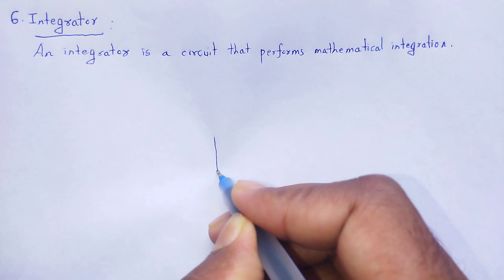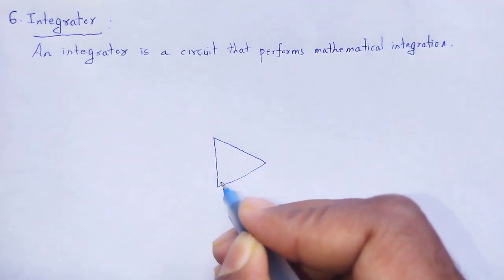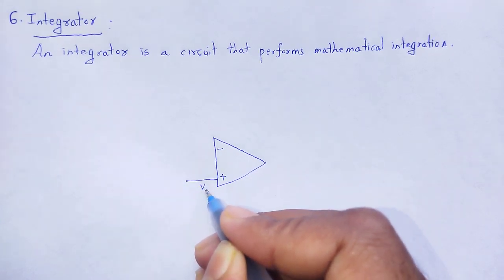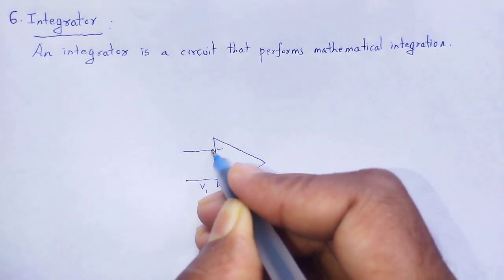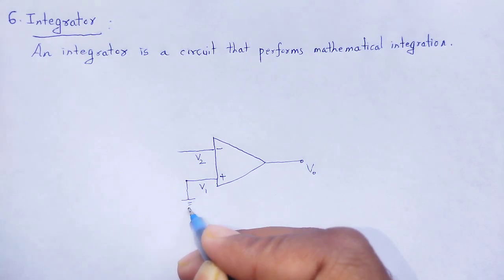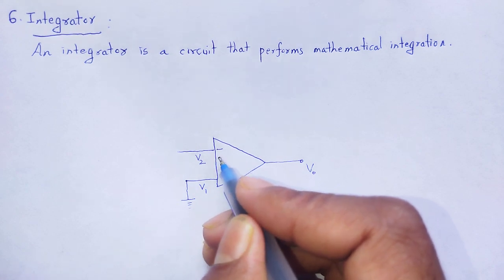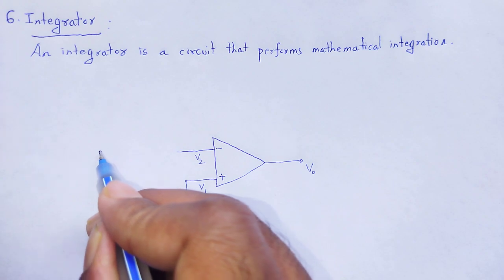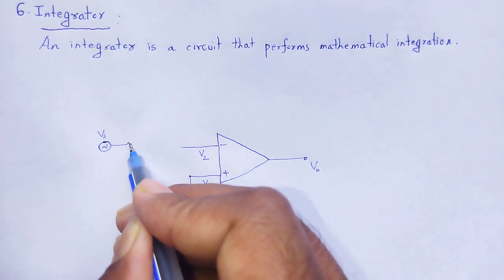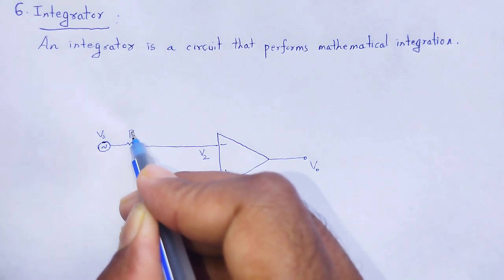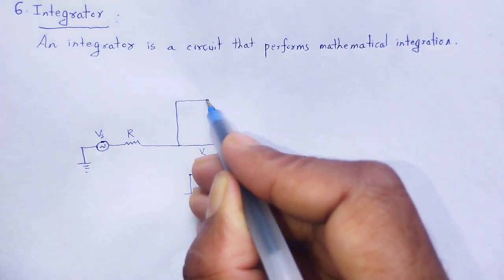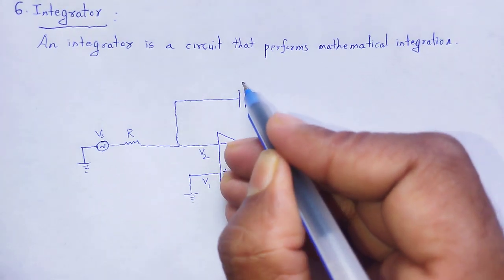Let us consider an OPAM. It has two terminals: positive non-inverting terminal with potential V1, and negative inverting terminal with potential V2, and output V0. That positive terminal is grounded, and we provide the signal through the negative terminal, which is called the inverting terminal. The signal Vs is provided through a resistor having resistance R, and in the feedback network we use a capacitor having capacitance C.